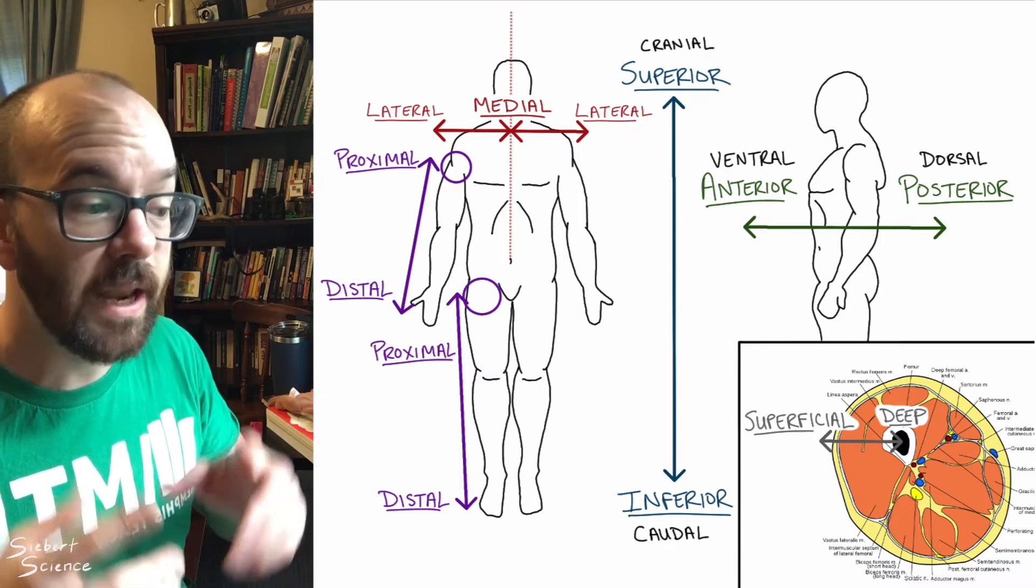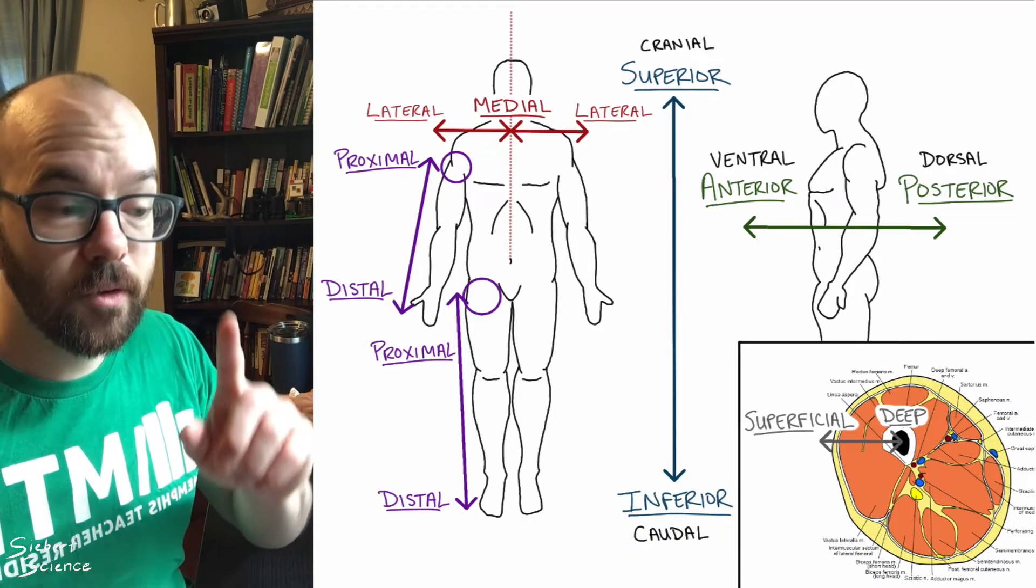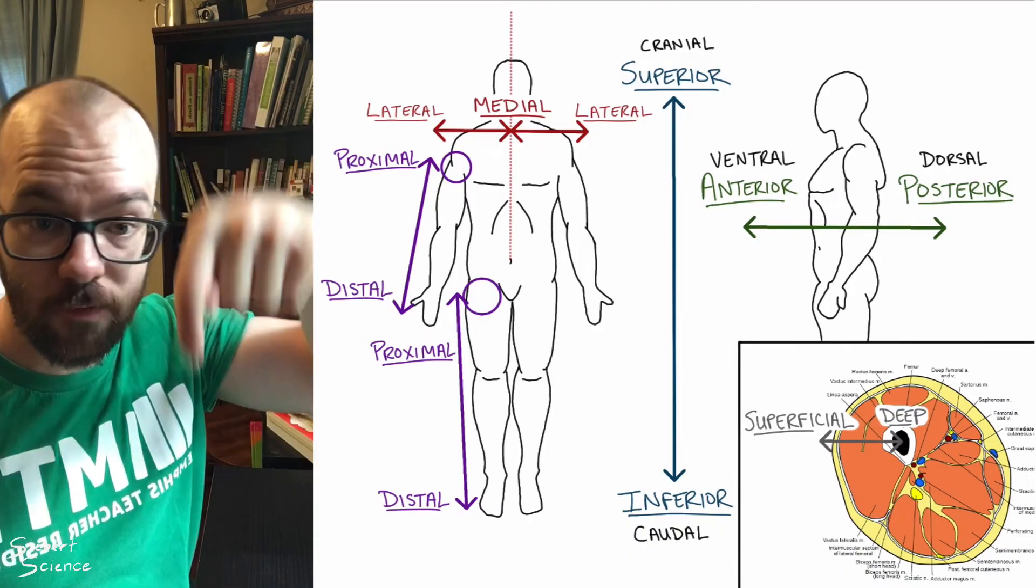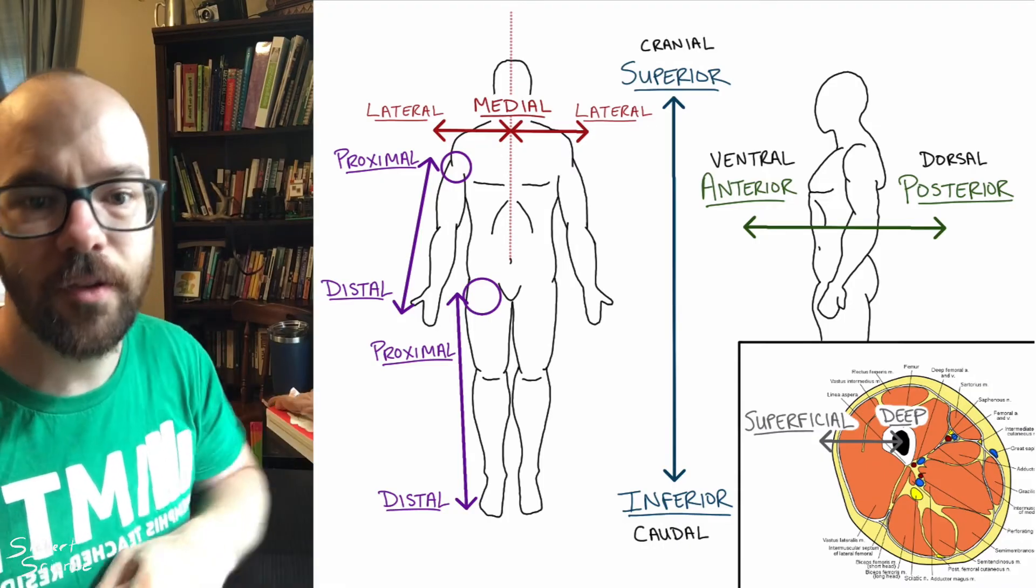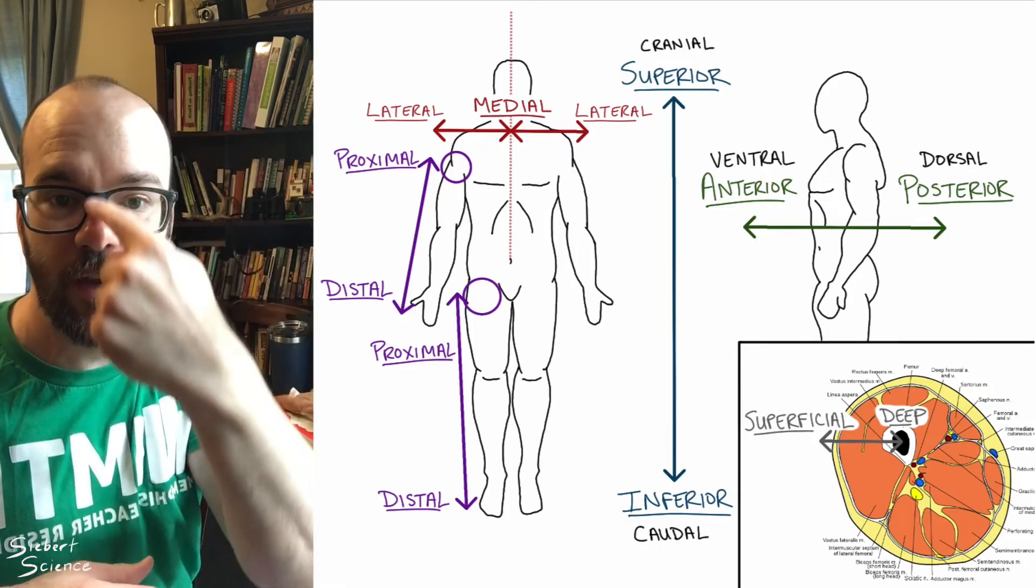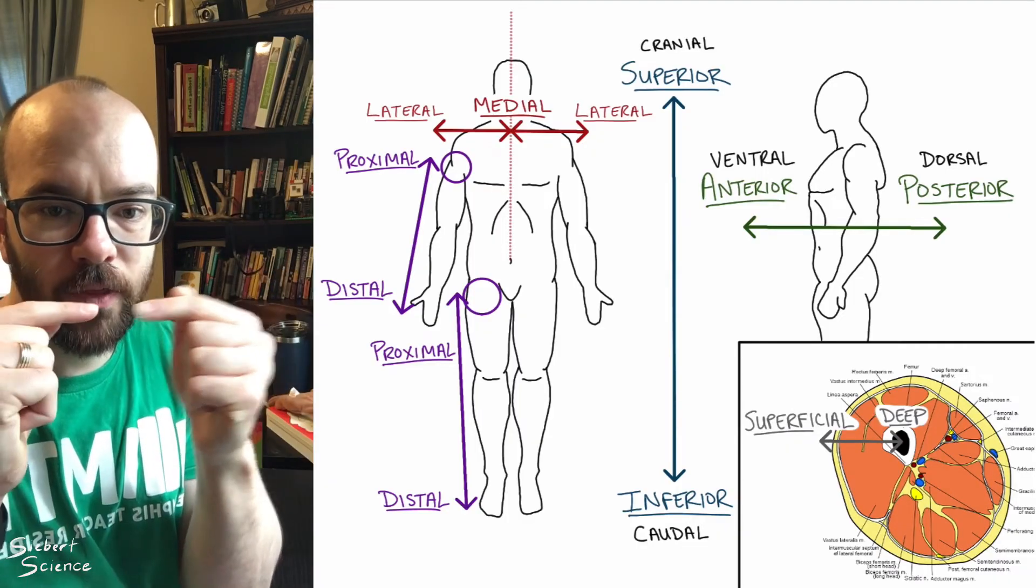So let's recap these really quick. In anatomical position, somebody's standing straight up, palms forward, facing forward. Superior means up, and inferior means down. And for humans, cranial and caudal are the same as those two terms. If you draw a center line down the body, we've got lateral toward the side or more medial toward that center line.